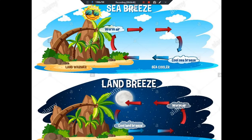Land par temperature kam hai iske wajah se wahaan high pressure area create ho jaayega aur water bodies par temperature zyada hai jiski wajah se wahaan low pressure area create hoga. Jo air hai wo basically from the high pressure area to the low pressure area move karna shuru karegi — wind ki direction from the land to the sea hai. Isi ko hum log bolte hain land breeze. Toh din mein sea breeze chalti hai aur raat mein land breeze.